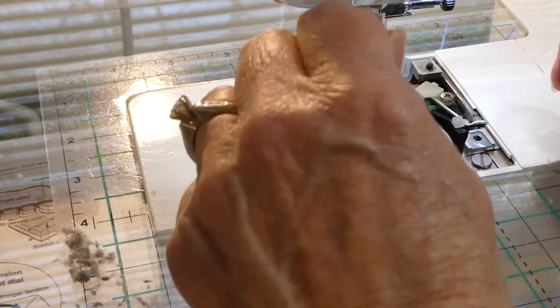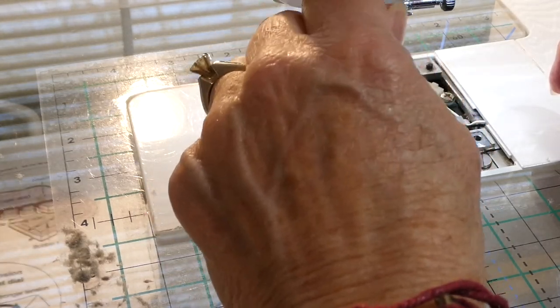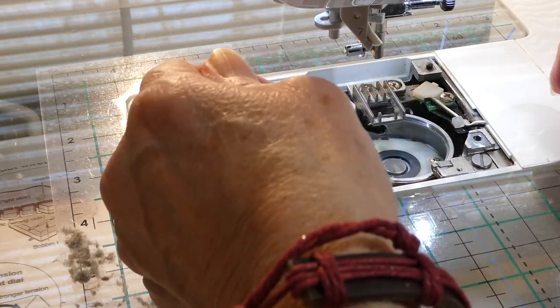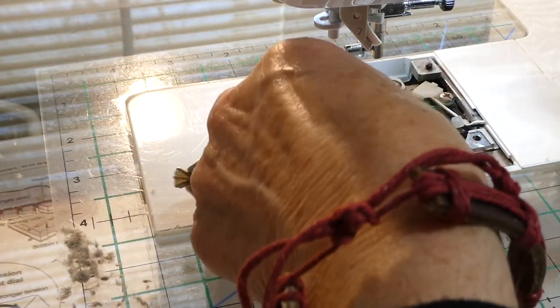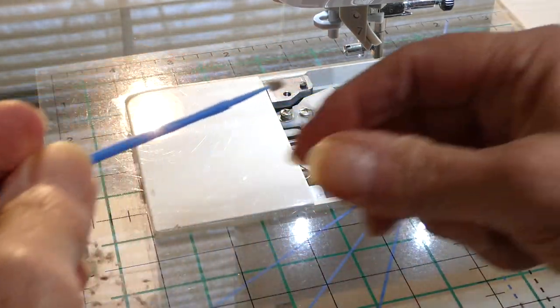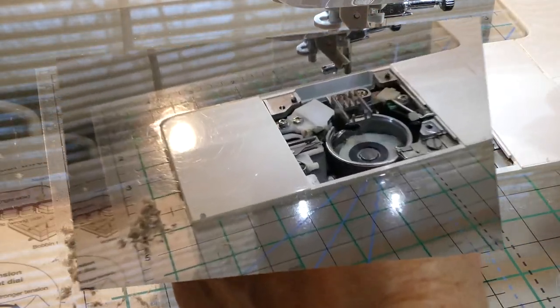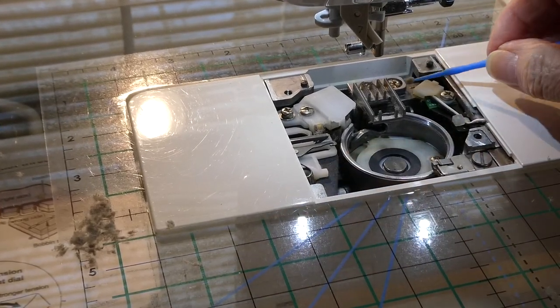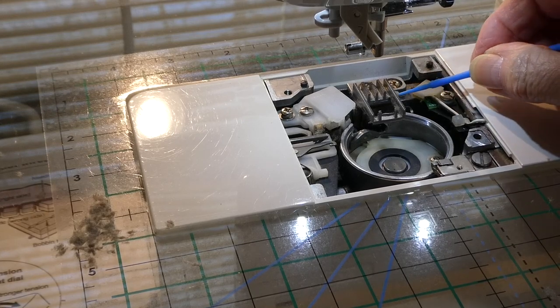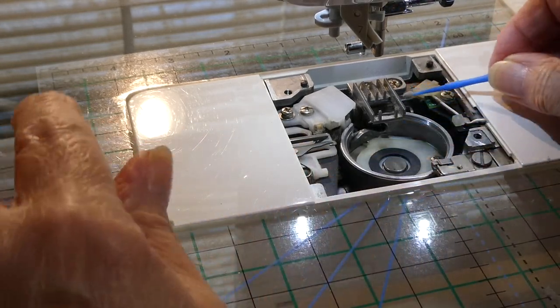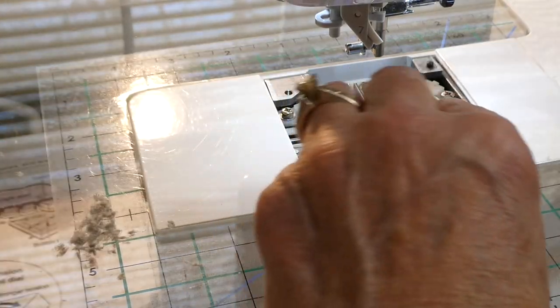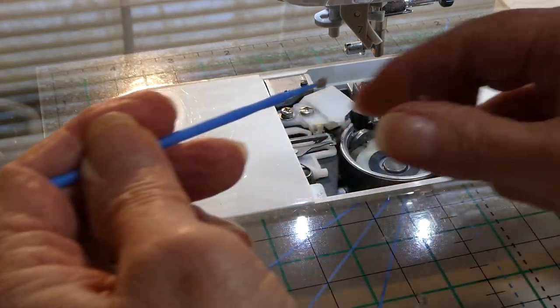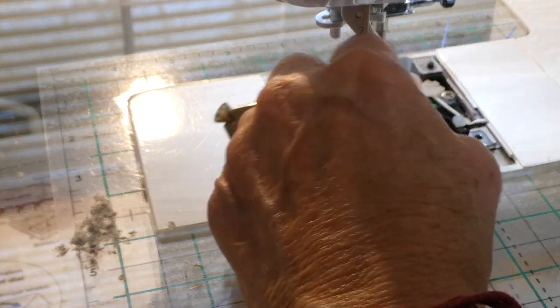Once you've finished cleaning your machine to where you're happy that you've gotten everything that you can get out of it, then we'll start to put it back together. I'm still getting dust out, so I'm going to keep on cleaning. Also, pay close attention to the sides of your feed dogs because they gather up dust and lint as well. I am, if you haven't noticed, going in every single cranny that my machine has, everywhere I can possibly see where it might hold some lint.